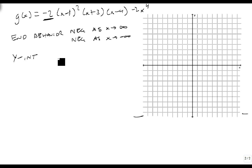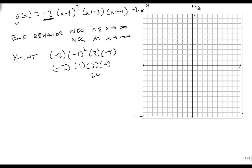Our y-intercept, we plug in 0. That gives us a minus 2 times a minus 1 squared times a 3 times a minus 4. Well, minus 1 squared is just 1 times 3 times minus 4. That gives me 8, 24, so it's going to be way up here. And so let's make all of our tick marks equal to 6, or let's make them equal to 3. 3, 6, 9, 12, 15, 18, 21, 24. So there's my y-intercept.